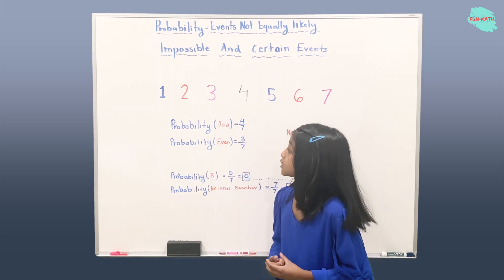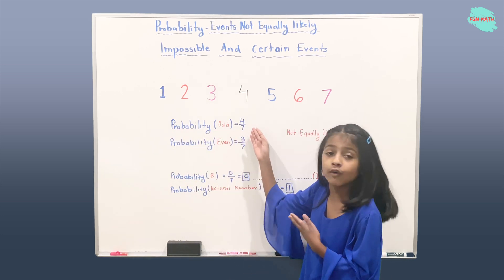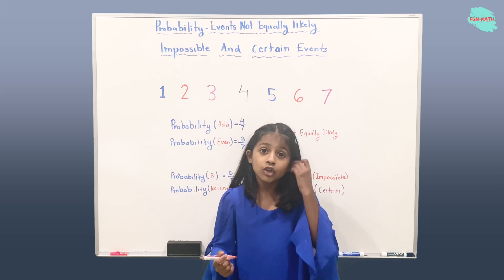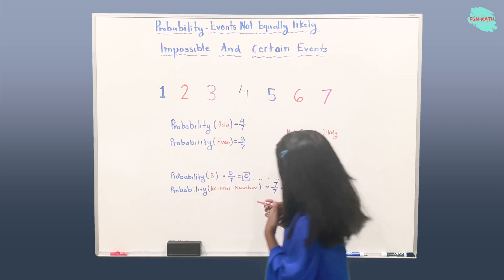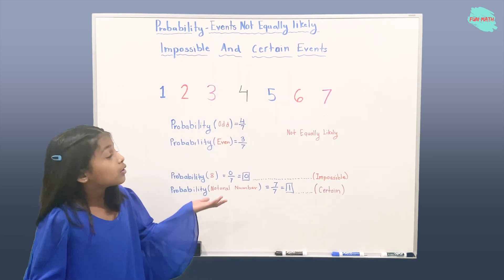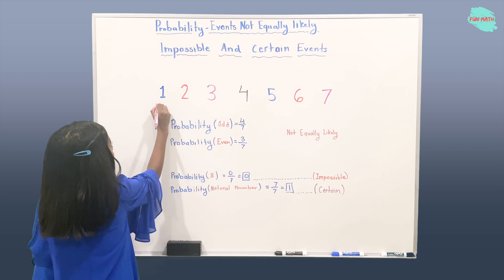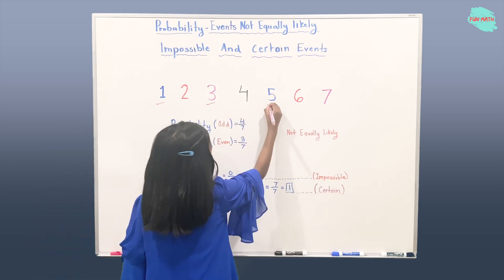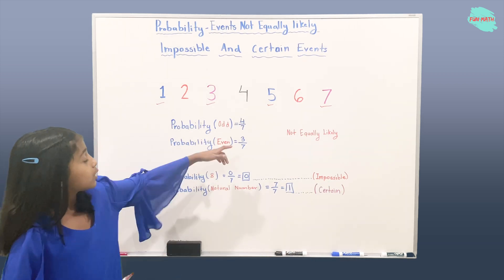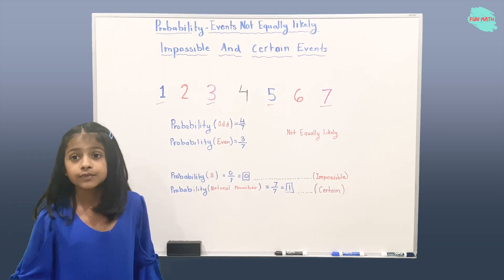So let's first see the probability of getting an odd number, which is four over seven. How did we get four as our numerator? We got four as our numerator because there are four odd numbers: one, two, three, and four. That is why we got our numerator as four, and those are all the possibilities of odd numbers.